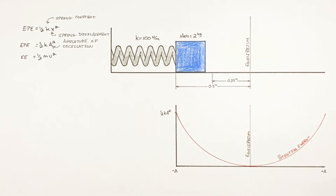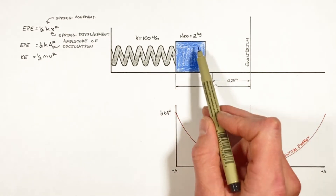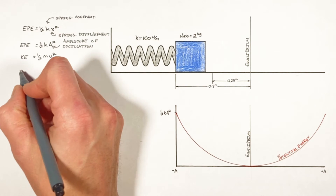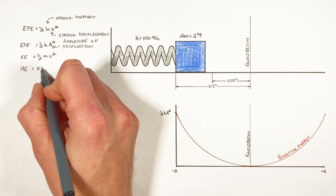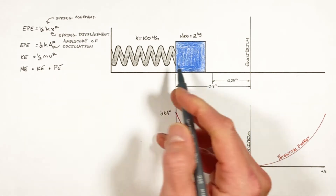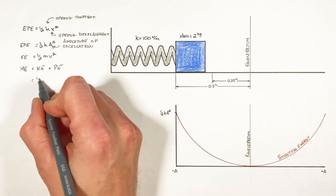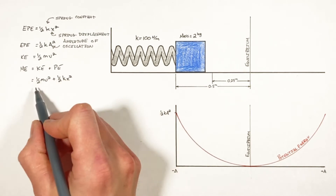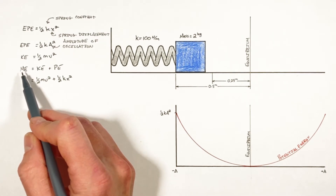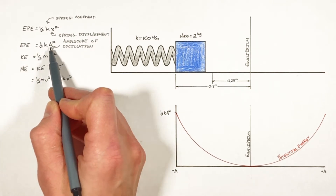The key idea is that as the potential energy of the spring decreases, the block gains kinetic energy. This goes back to mechanical energy: the total mechanical energy equals kinetic energy plus potential energy of the system — the spring and block together. At any point, the total mechanical energy equals the total kinetic energy plus the total potential energy, and this total equals the energy we started with: one-half k·a squared.